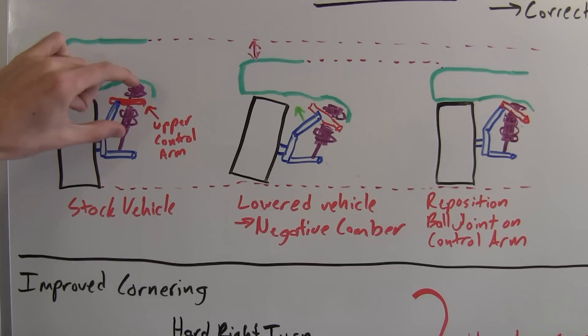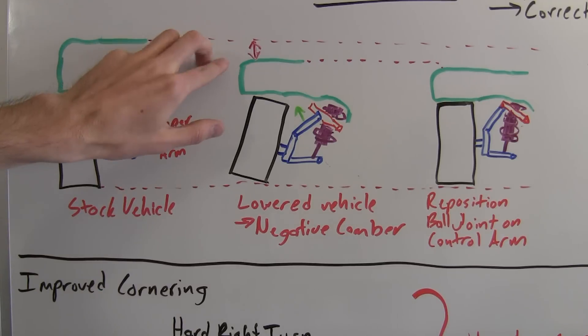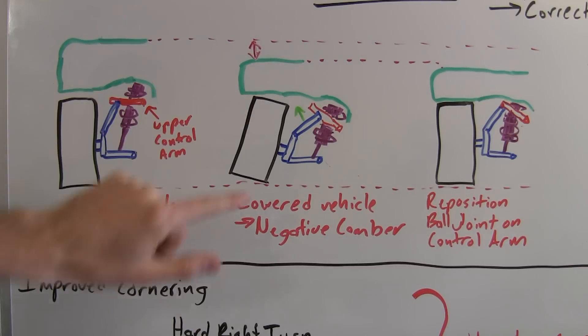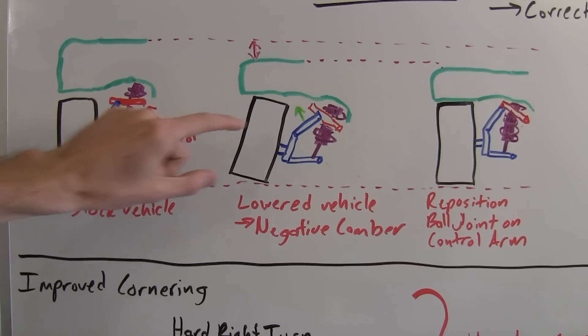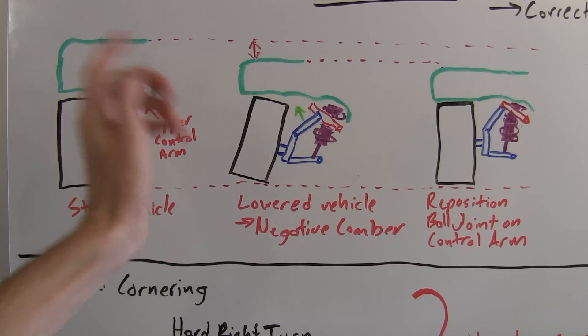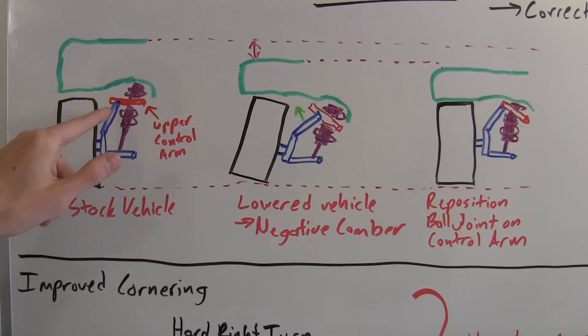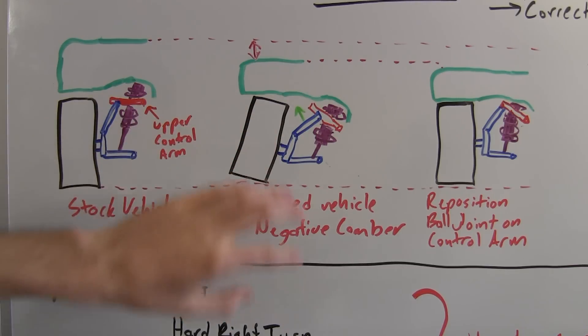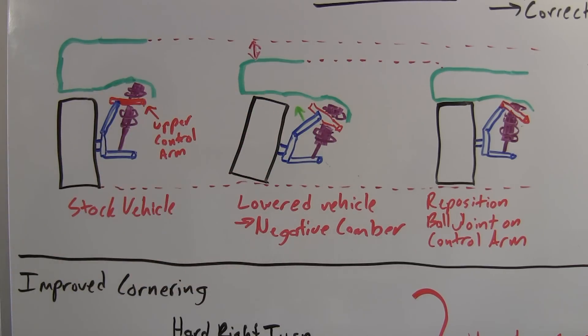What we're going to do is adjust this coil over and lower the vehicle down. As we lower it, you can see there's a small amount that we've lowered it. As this control arm pivots up, it's going to pull this in and induce negative camber onto this tire. Now it's slightly exaggerated, of course, but basically this is the idea of what's happening.